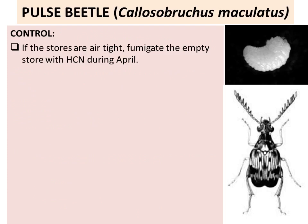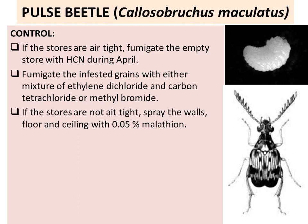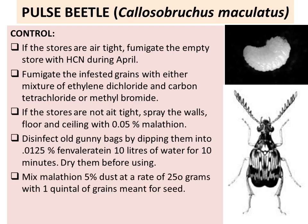If the stores are airtight, fumigate the empty store with HCN during April. Fumigate infested grains with either a mixture of ethylene dichloride or carbon tetrachloride, or methyl bromide. If the stores are not airtight, spray the walls, floor, and ceiling with 0.05% malathion. Disinfect all gunny bags by dipping them into 0.0125% solution in 10 litres of water for 10 minutes, then dry them before using. Mix malathion 5% dust at a rate of 250 grams with one quintal of grain meant for seed.